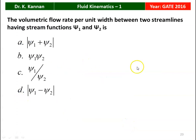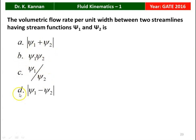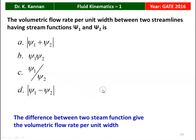The next question from the 2016 question paper. The volumetric flow rate per unit width between two stream lines having stream functions ψ₁ and ψ₂ is: |ψ₁ + ψ₂|, ψ₁·ψ₂, ψ₁/ψ₂, or |ψ₁ - ψ₂|. The difference between two stream functions gives the volumetric flow rate. So the correct answer is option D — modulus of ψ₁ minus ψ₂.